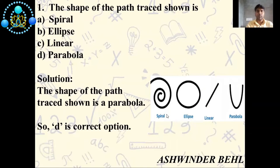First question: the shape of the path traced shown is spiral, ellipse, linear, or parabola. The solution is the shape of the path traced shown is a parabola. So D is correct option.